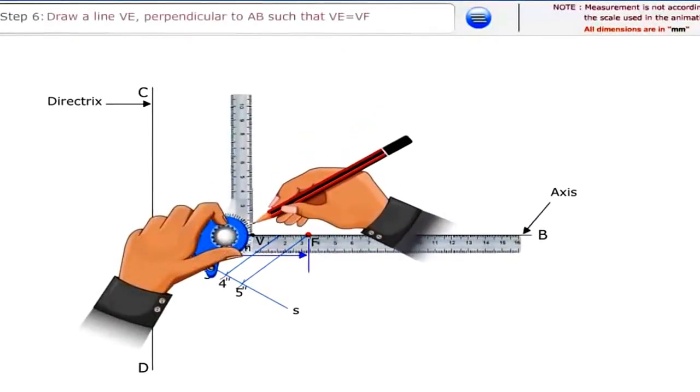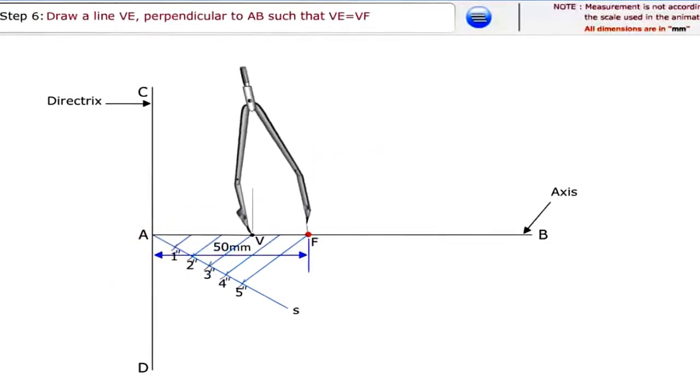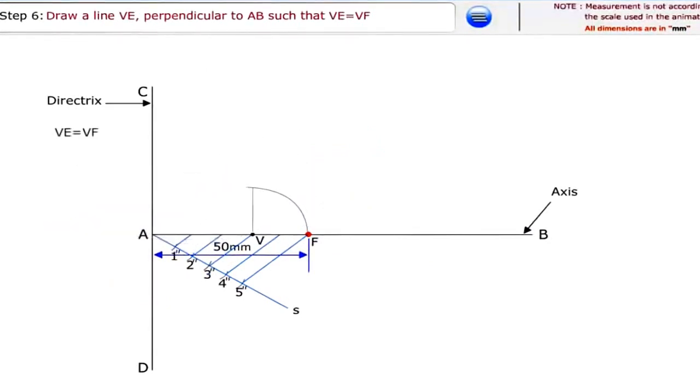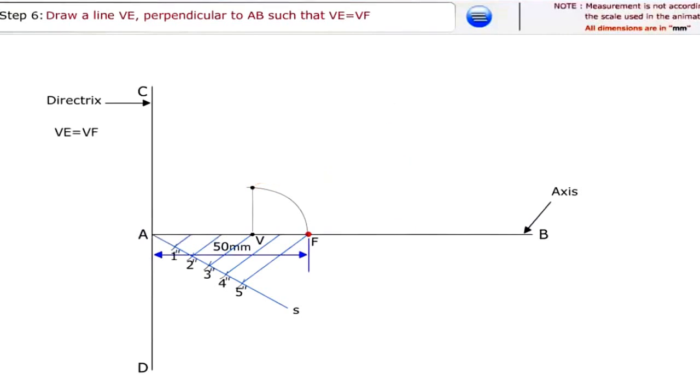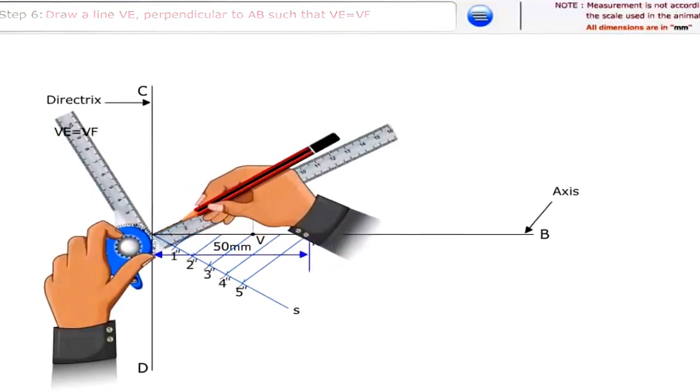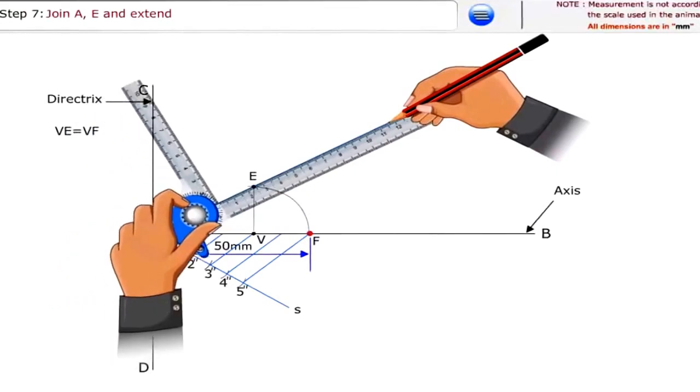Draw a line VE perpendicular to AB such that VE is equal to VF. Join AE and extend.